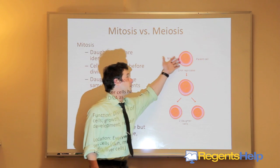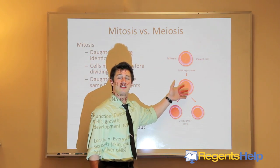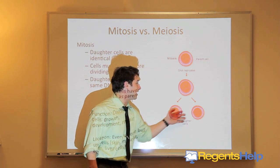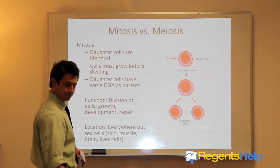So we have the parent cell, DNA replication, and the cell growing, and then two daughter cells with identical DNA to the parent.